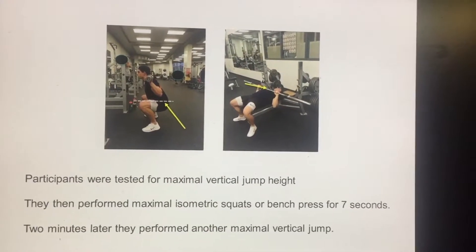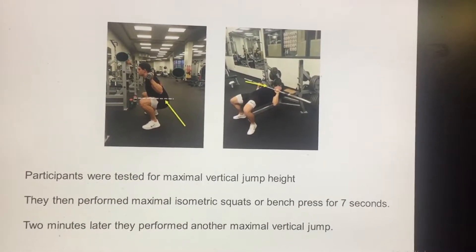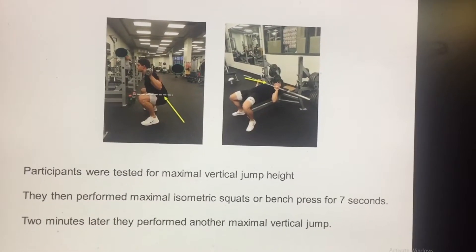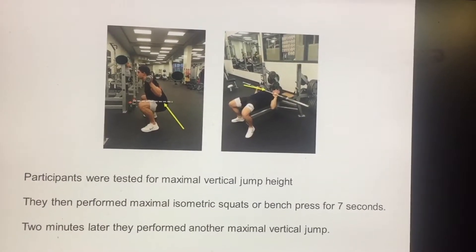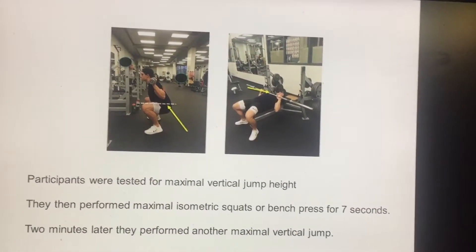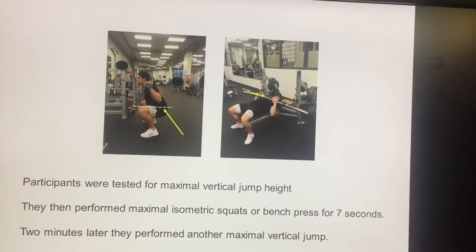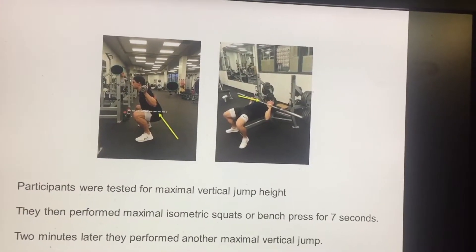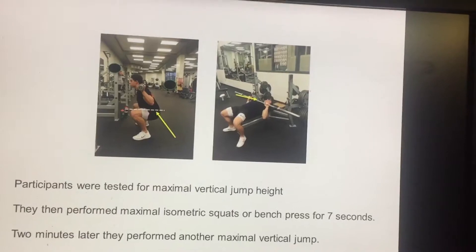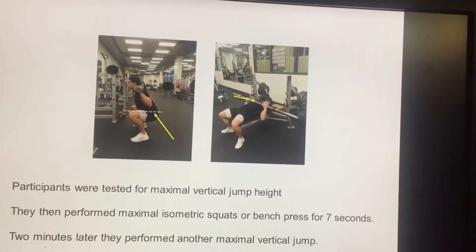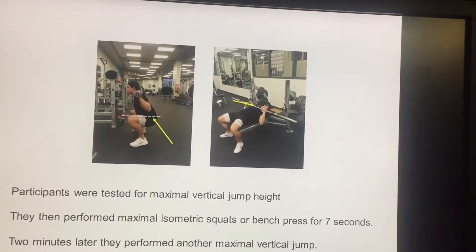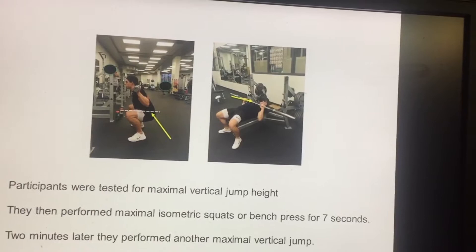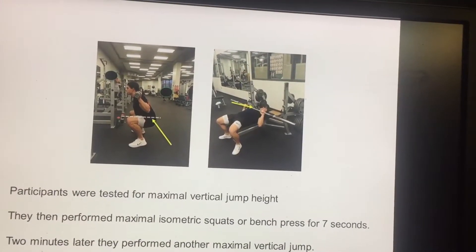We had participants tested for the maximal vertical jump, and they then performed a maximal isometric squat or bench press for seven seconds. Two minutes later, they performed another maximal vertical jump. They came in on different days — one day they did a maximal isometric squat for seven seconds, and a couple of minutes later did the vertical jump. The next day they came in and did a maximal bench press, and a couple of minutes later performed a vertical jump.